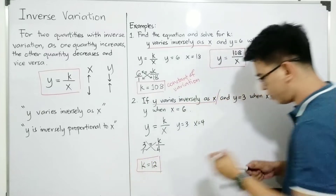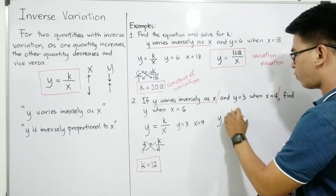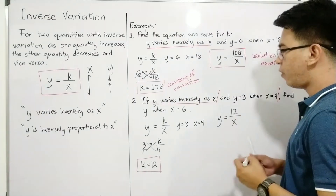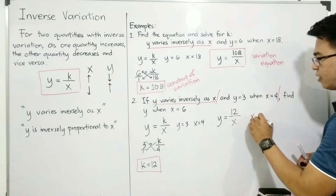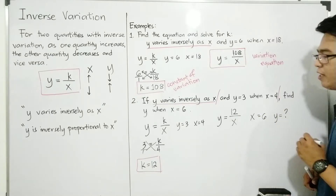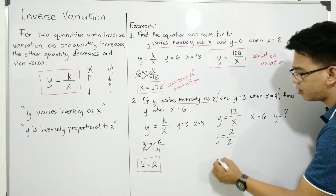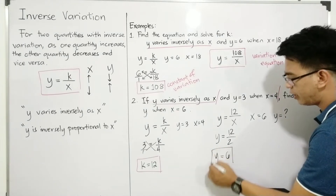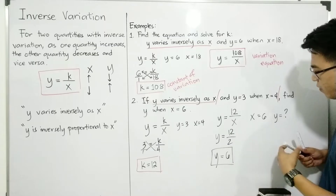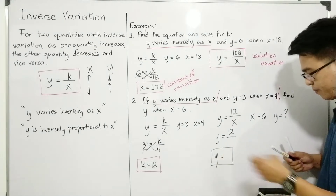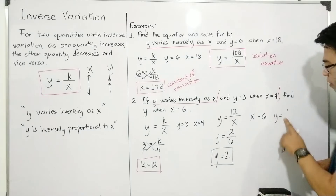Now, as per the concept of variation, we will replace k by 12. Our new equation is y is equal to 12 over x. Now let's go with the main problem: find y when x is equal to 6. So your x is equal to 6 and your y is unknown. We will replace x by 6: y is equal to 12 over 6. Simplifying, this gives you y is equal to 2.